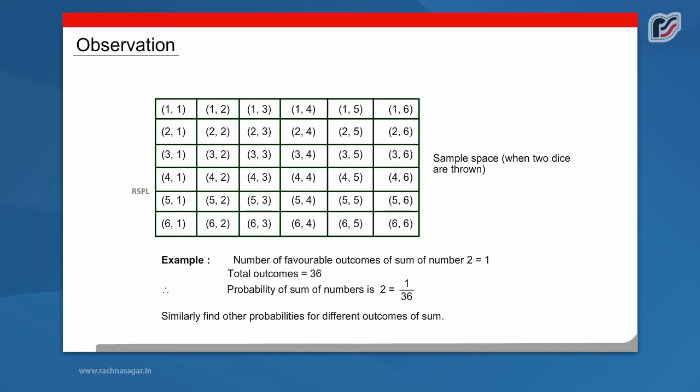Number of favorable outcomes of sum of number 2 is equal to 1. Total outcomes is equal to 36. Therefore, probability of sum of numbers is 2 equal to 1 by 36. Similarly, find other probabilities for different outcomes of sum.